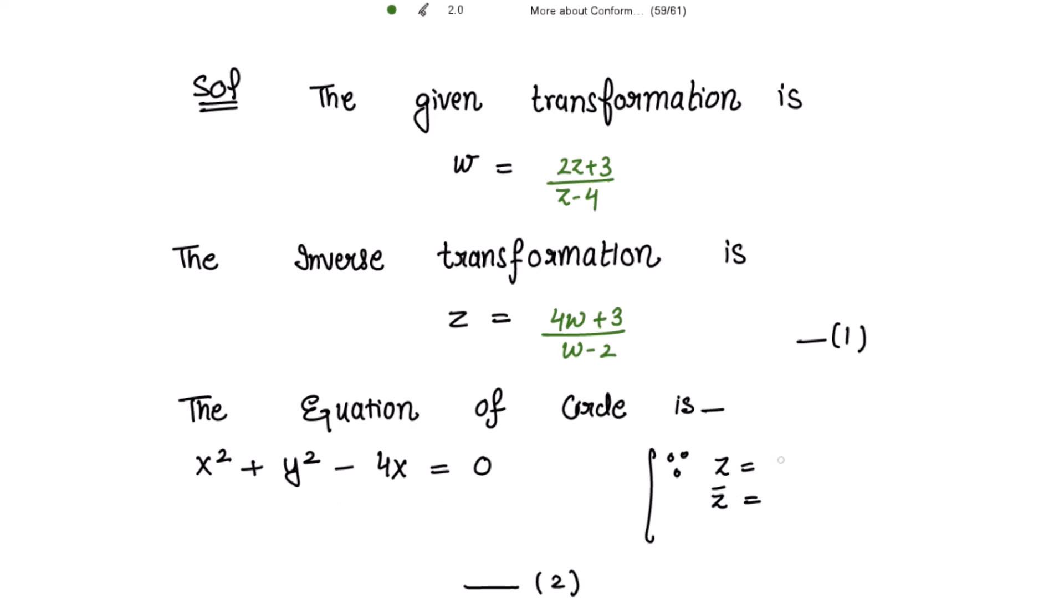As z is x plus iy and z̄ is x minus iy, if I multiply these two I get x² plus y². So instead of x² plus y² I can write zz̄ minus 4.